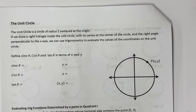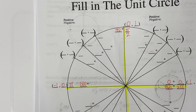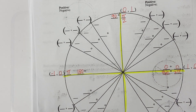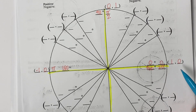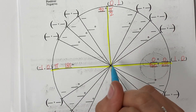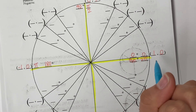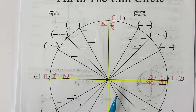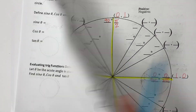Hey guys! So today we're going to learn the unit circle. We kind of talked about this a little bit last week where we filled in what's called the quadrantals — the zero, pi over two, pi, three pi over two, and two pi. And because this is on the coordinate plane, here's the origin. We talked about the radius being one, so that's how we got those points. But now we're going to go back and fill in the rest.